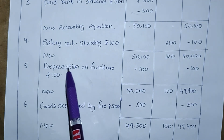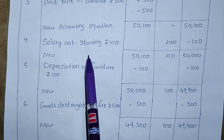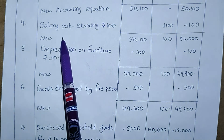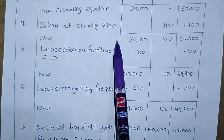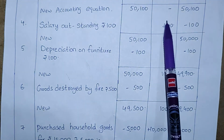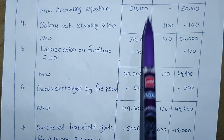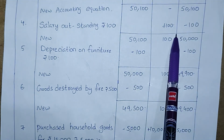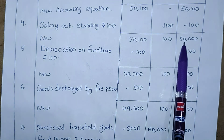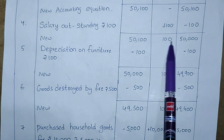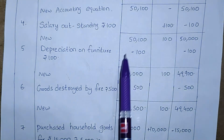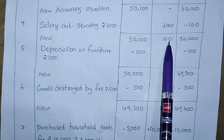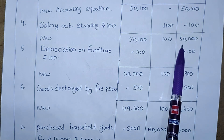Next, salary outstanding is Rs. 100. 100 rupees outstanding — write in the liabilities column. So it is 50,100. Minus 100 from capital which is the outstanding amount. The liabilities outstanding will be 100. So the accounting equation is: Assets = 50,100, Liabilities = 100, Capital = 50,000.